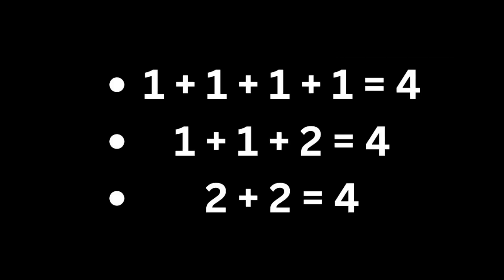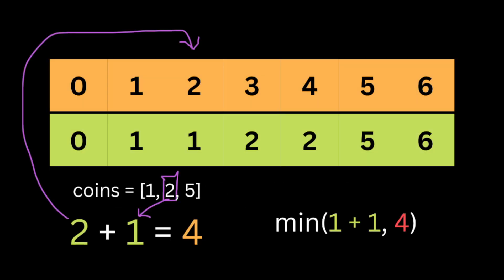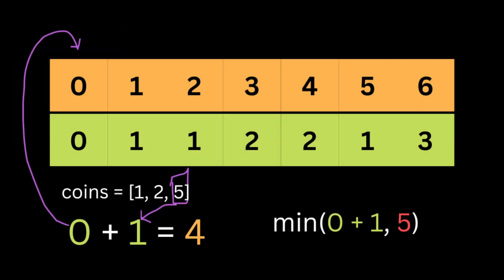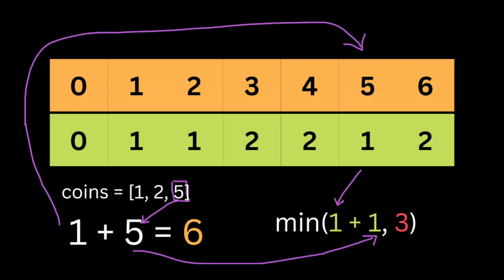Now it comes to the interesting part. To make amount four with coins one and two, we only need two coins — that's the minimum. We can also add coin two to amount two to get four, confirming the minimum is two. Similarly, from amount four we can add one coin of value two to reach amount six, and so on.